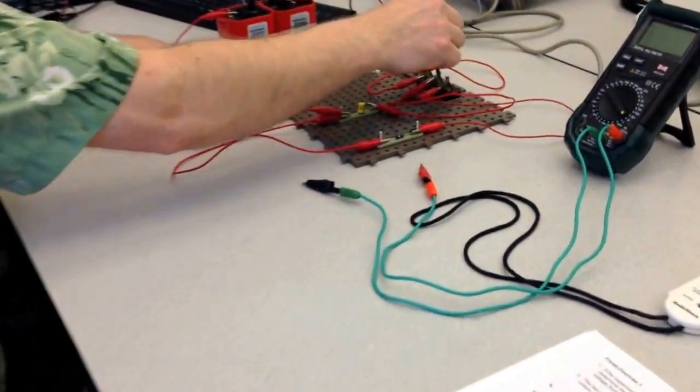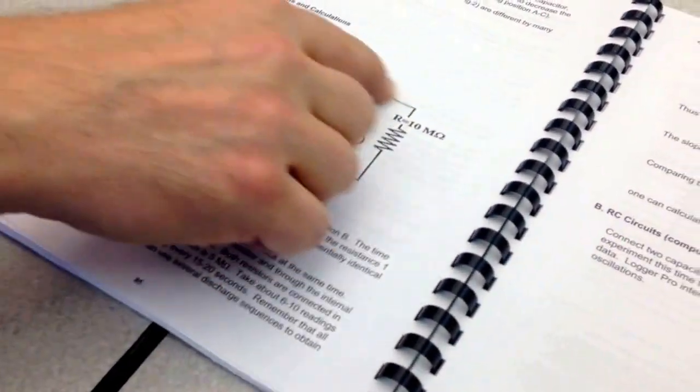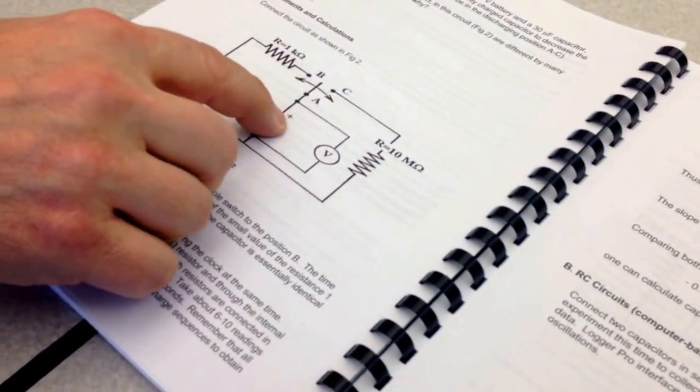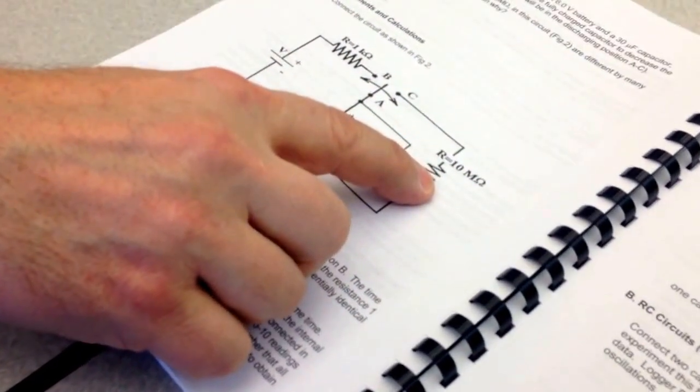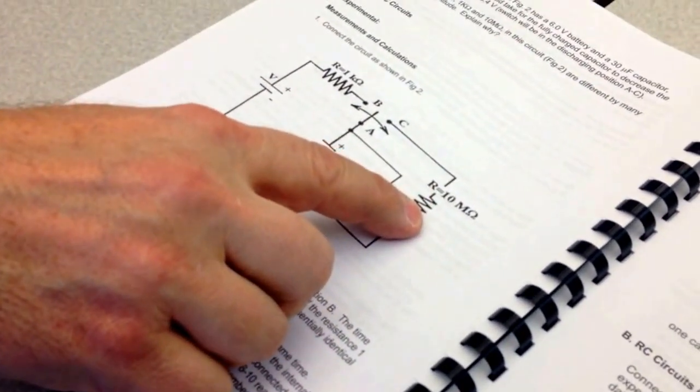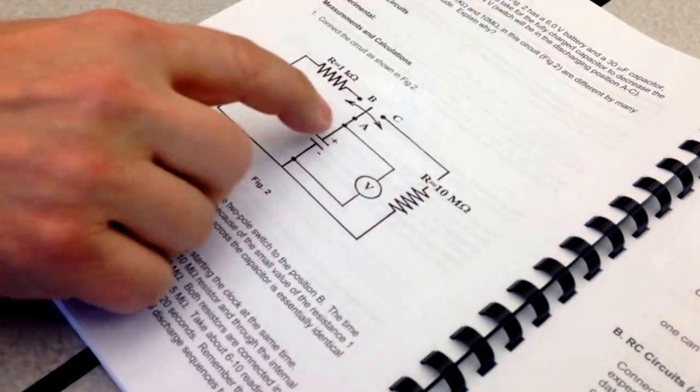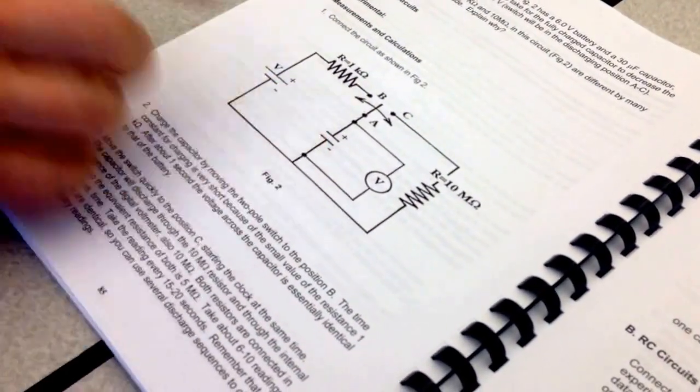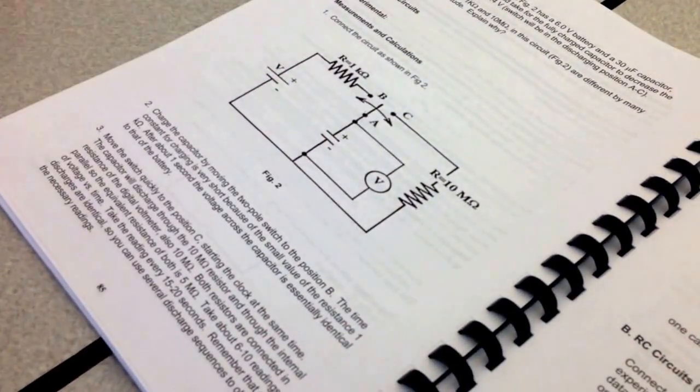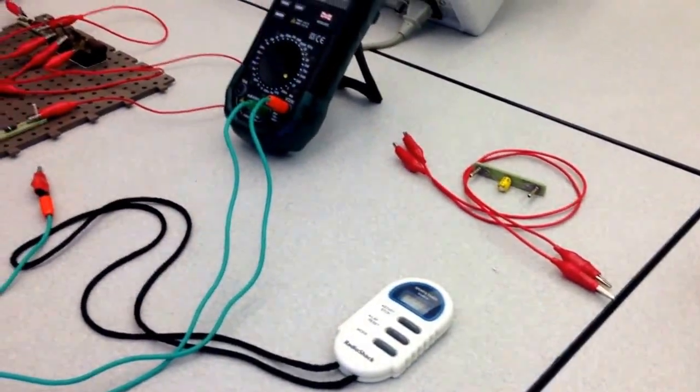Since we have a single pole, double throw switch, when the switch goes to point C, this circuit now is closed. Current from the capacitor will discharge through a very high resistance. In this case, it's 10 mega ohms. And because the resistance is very high, the current will be very low. So with a voltmeter attached across the capacitor, we'll be able to see how the voltage discharges with time and take measurements every 15 to 20 seconds.